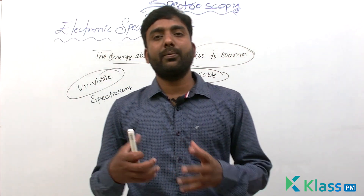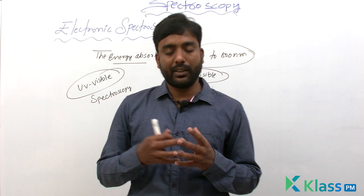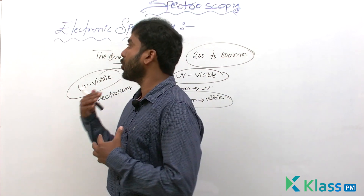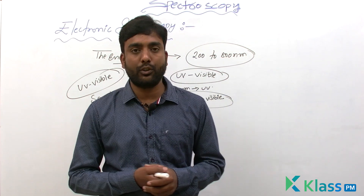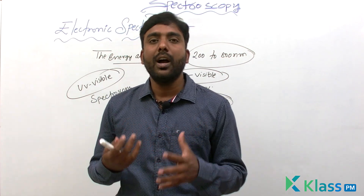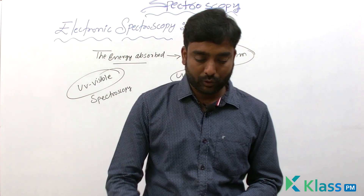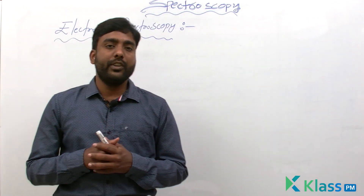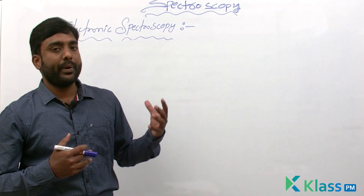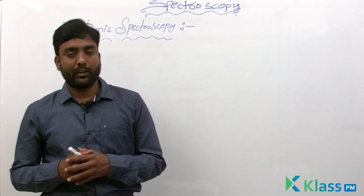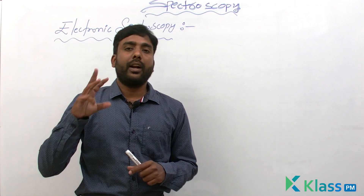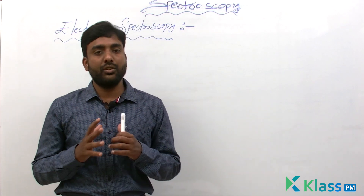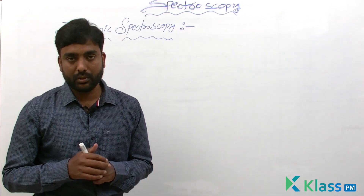Now we will see what are the different types of transitions that occur in UV-visible spectroscopy or electronic spectroscopy. There are three types of transitions that occur.